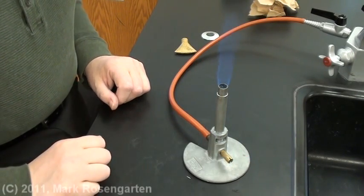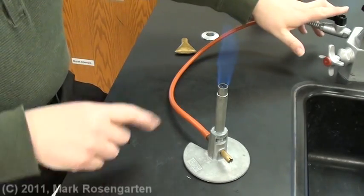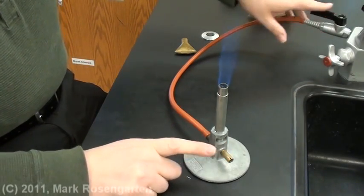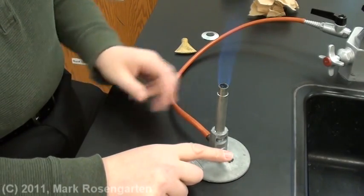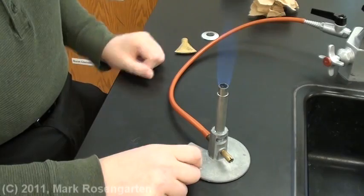To turn the burner off, you turn it off from the source, not at the burner. This way, you turn it off at the source, all this gas will burn out first. If you turn it off here, the gas will stay trapped in here and won't burn off.